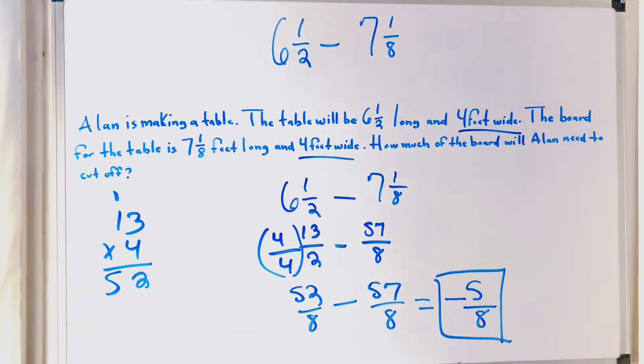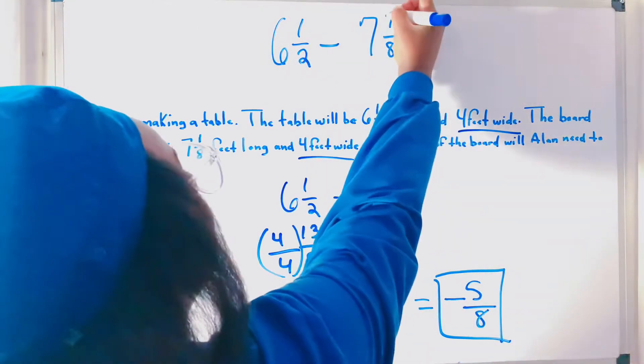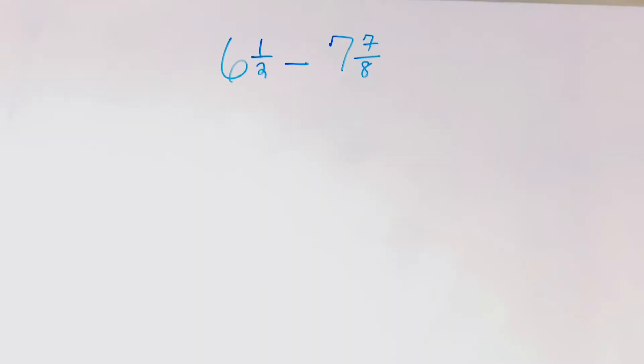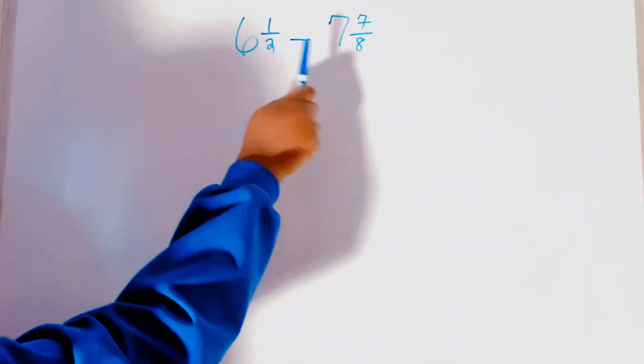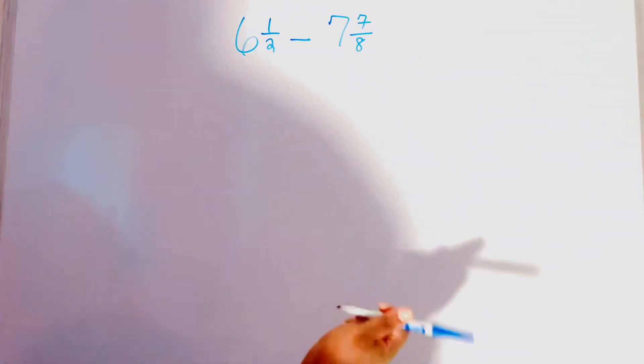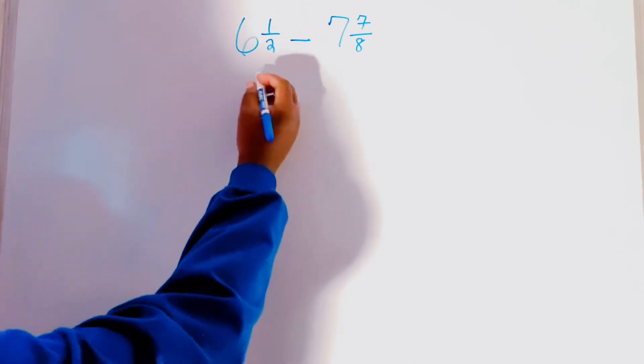Now, if you want to do this same exact problem, but plug in a 7 here, let's solve this. Now, you have to pay attention to what the question is asking you and what form they want the question in. Okay? So, technically there's two answers to this and I'll show you guys both ways. So, we have 6 and 1 half minus 7 and 7 over 8.